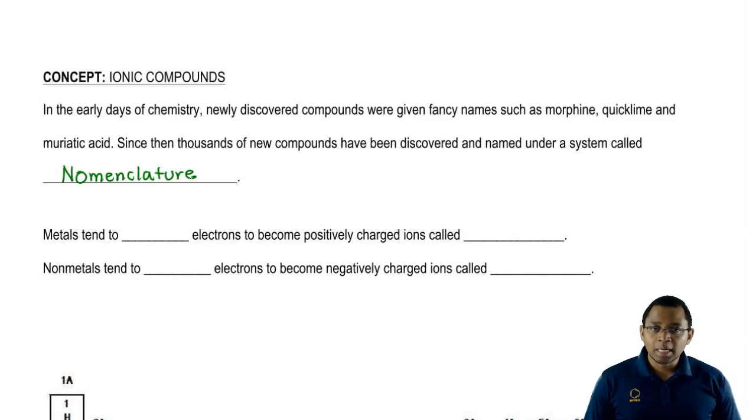Chemists all around the world use nomenclature. Our main focus here is to identify the first type of compound we're going to learn how to name: ionic compounds. Fundamentally, an ionic compound is just the connection between a positive ion, which is called a cation, and a negative ion, which is called an anion.